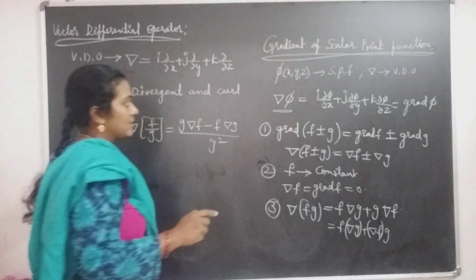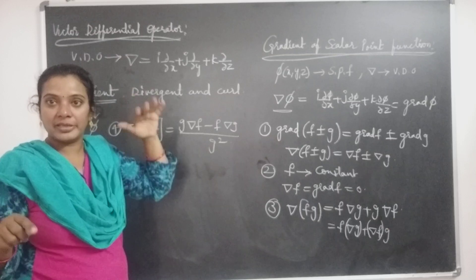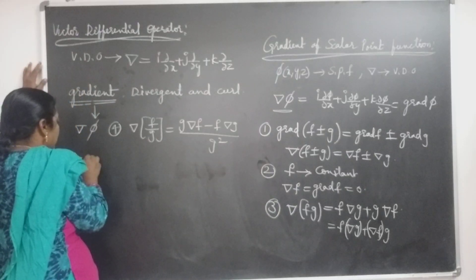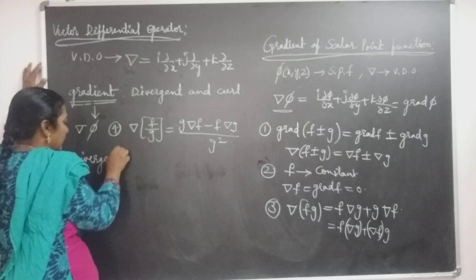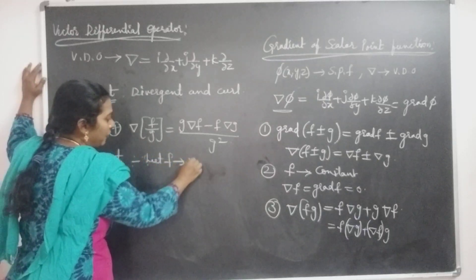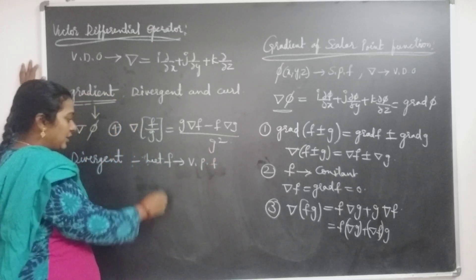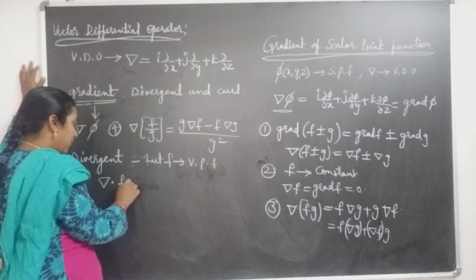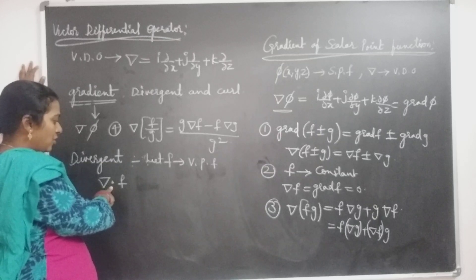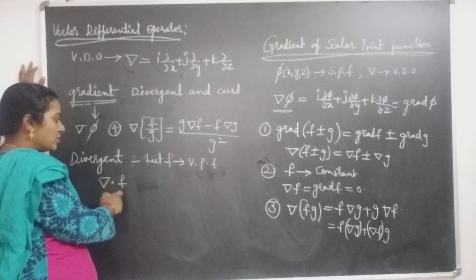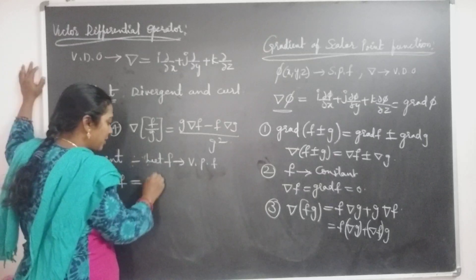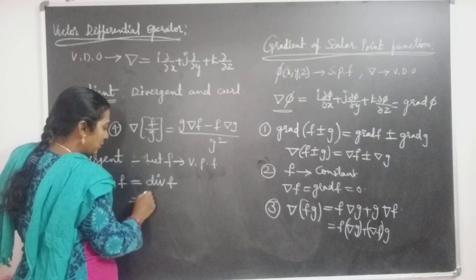The vector differential operator operating with a scalar point function is called the gradient. Divergence means: let F be a vector point function in any region. The dot product between the vector differential operator del and the vector point function F is called the divergence of F, that is del · F, simply denoted as div F. Div F equals del · F.